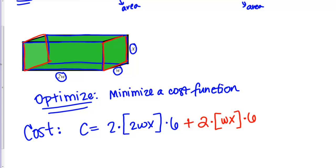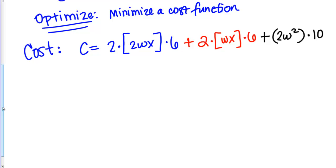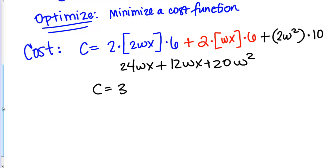There's one more piece — the base. We also have to pay to make the base of this container. There's just one base because it's an open container. The area of the base is 2W times W, which is 2W squared. Material for the base costs $10 per square meter, so this term is times 10. Cleaning that up: from the first term we get 6 times 4 = 24WX, plus 12WX, plus 20W squared, giving us a cost function of 36WX + 20W².